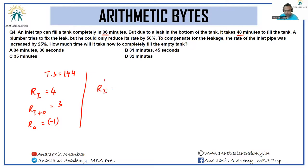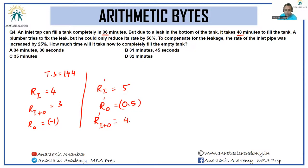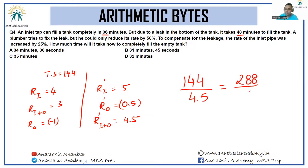After the plumber's work: new inlet rate increases by 25 percent, becoming 5. New outlet rate reduces by 50 percent, becoming 0.5 in magnitude. So the net new rate is 5 minus 0.5 = 4.5. Time taken = 144 / 4.5 = 32 minutes. Answer is option D.